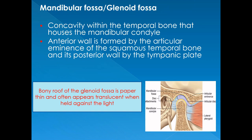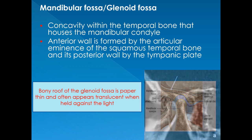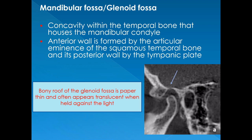The mandibular fossa, also called the glenoid fossa or articular fossa, is the concavity within the temporal bone that houses the mandibular condyle. Its anterior wall is formed by the articular eminence, and the posterior wall is formed by the tympanic plate, which forms the anterior wall of the external acoustic meatus. The bony roof of the glenoid fossa is paper thin and often appears translucent when held against light, showing that the articular fossa is not a functionally stress-bearing part of the TMJ.